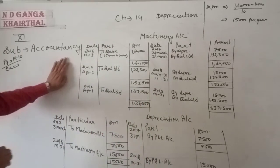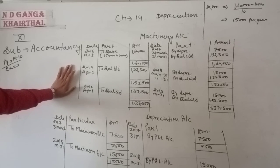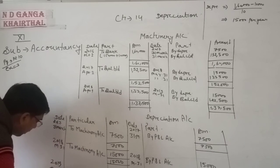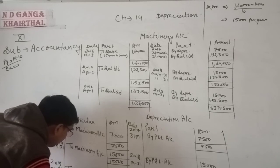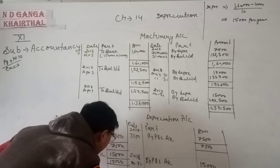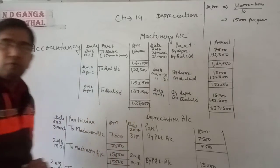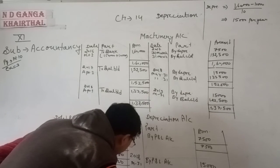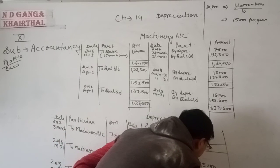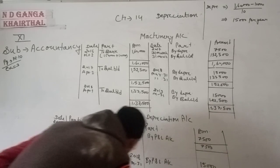According to the problem, we prepared the machinery account up to three financial years. For the depreciation account: on 31st March 2019, depreciation account is debited to machinery account for 15,000 rupees, and transferred to profit and loss account for 15,000 rupees.